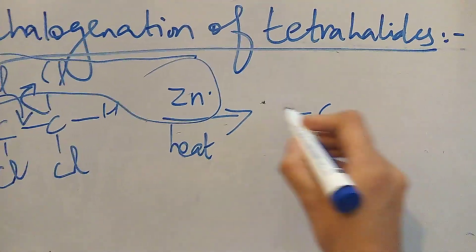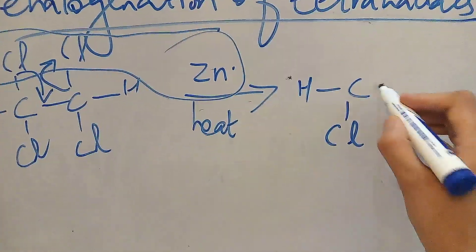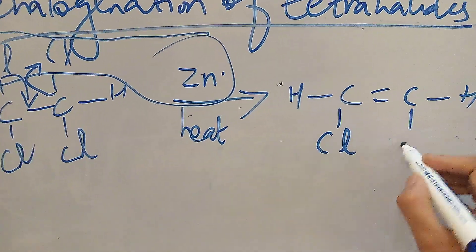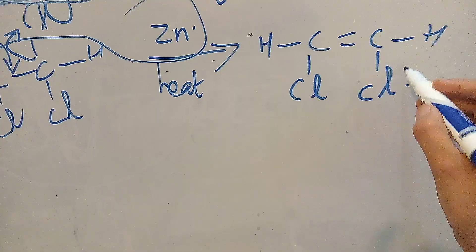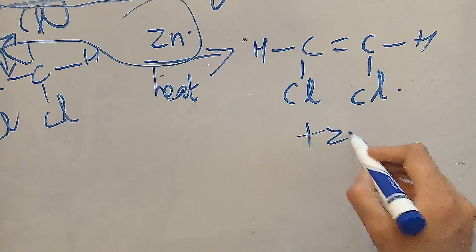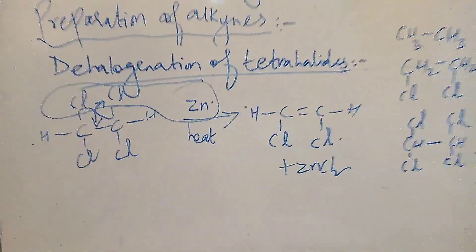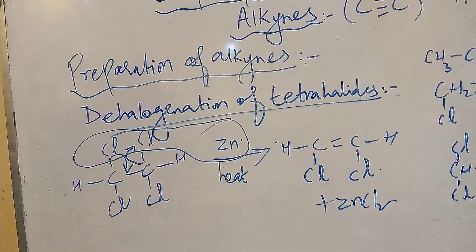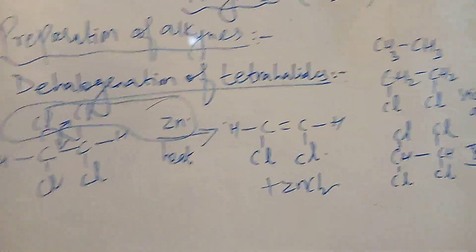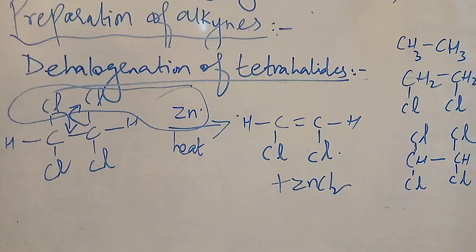Our product is CHCl double bond CHCl plus ZnCl2. So this is the first step of dehalogenation in which we will remove two halogens.